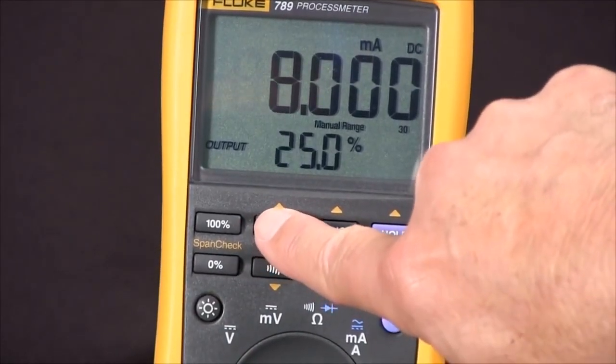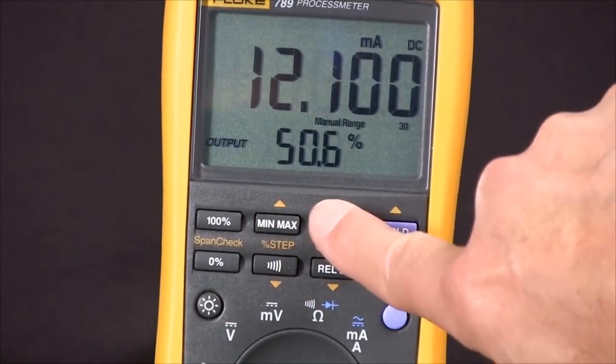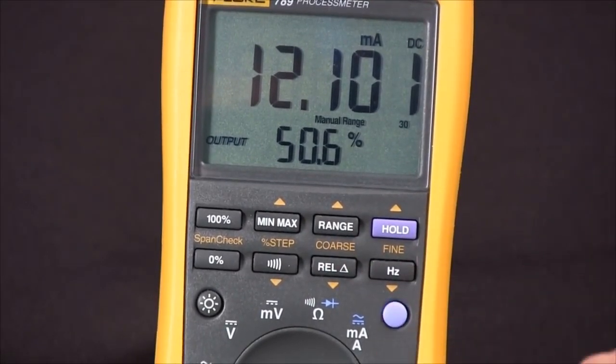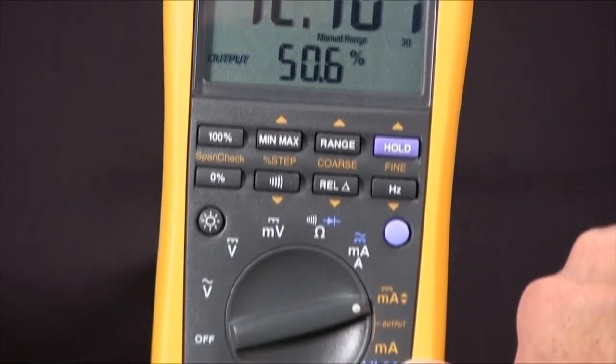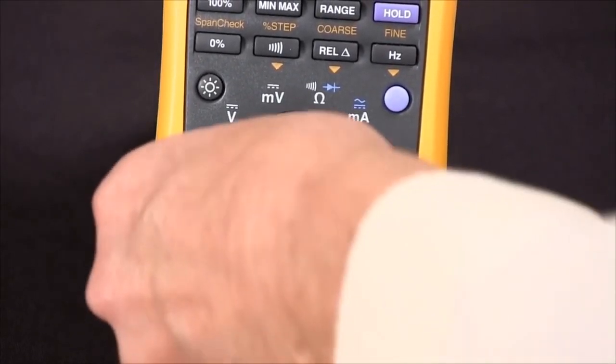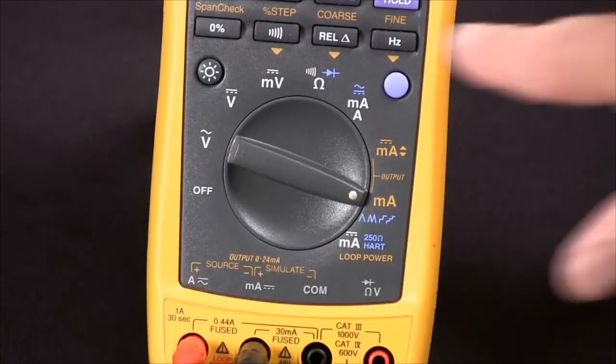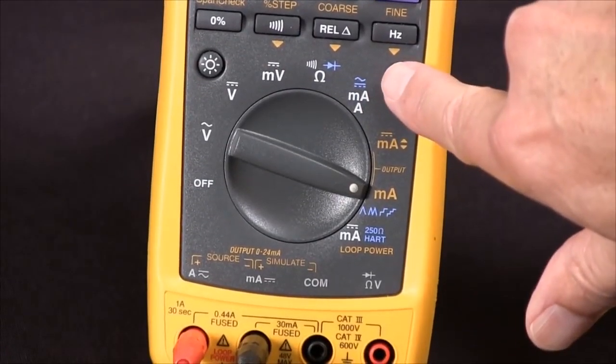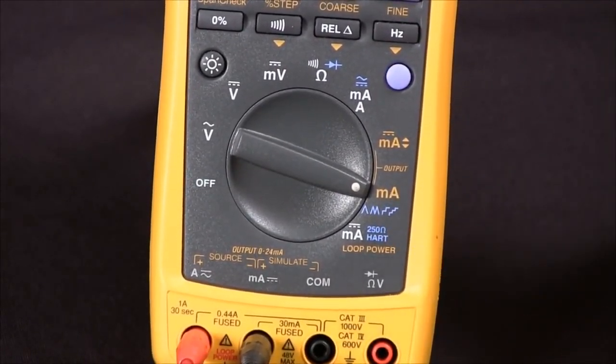If we need to do automatic ramping or step functions, we can go here to the other sourcing position, and with the blue key we can select one of those four.